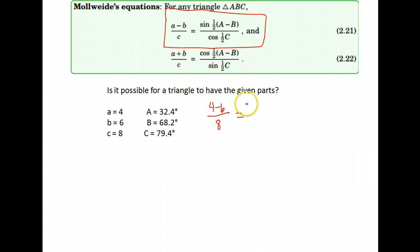Is that equal to the sine of one half of angle A minus angle B, so 32.4 minus 68.2, divided by the cosine of one half of angle C? So the cosine of one half of angle C was 79.4.